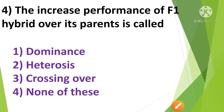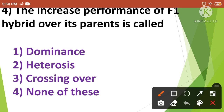Next question: The increased performance of F1 hybrid over its parents is called — 1st option dominance, 2nd option heterosis, 3rd option crossing over, and 4th option none of these. The correct answer is option 2nd, heterosis. The increased performance of F1 hybrid over its parents is called heterosis.